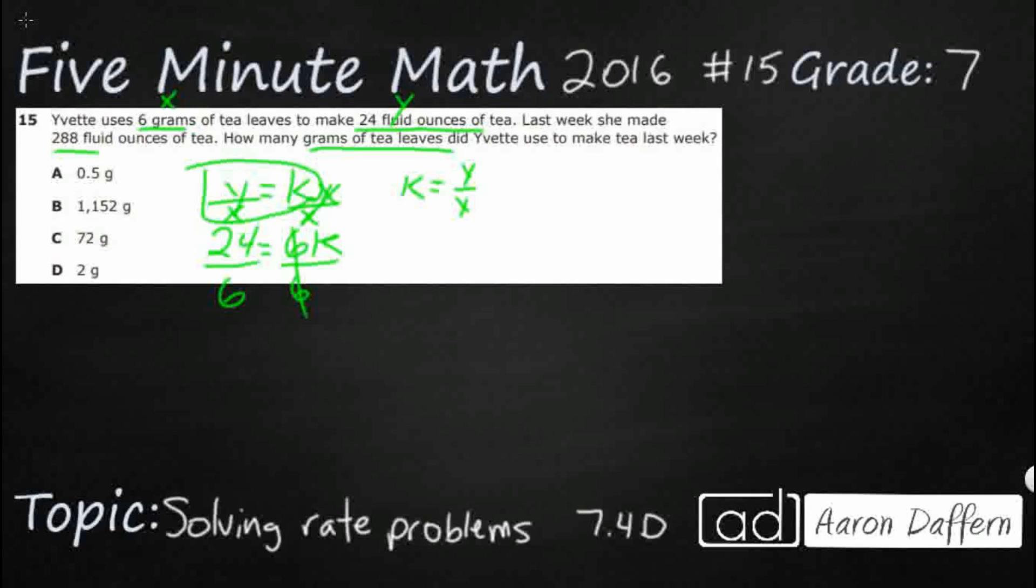So now that I know my constant here is 24 over 6, so 6 goes into 24 four times. So my constant is 4. So that means what I did is I took my 24 fluid ounces of tea by multiplying my constant of 4 by my how many grams of tea? That's my independent variable. That's my 6.